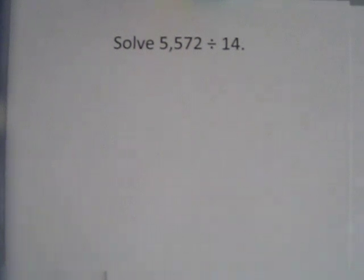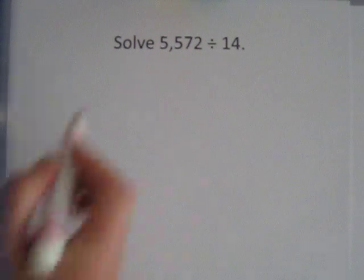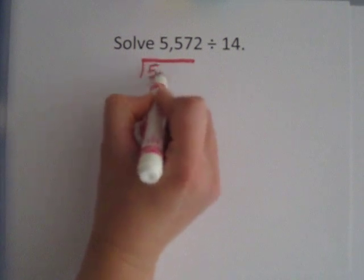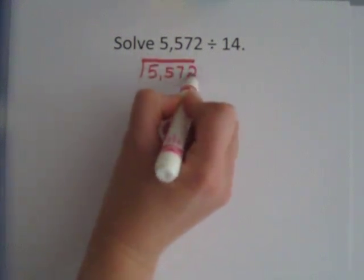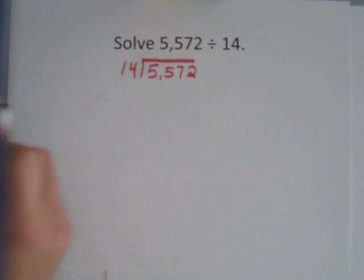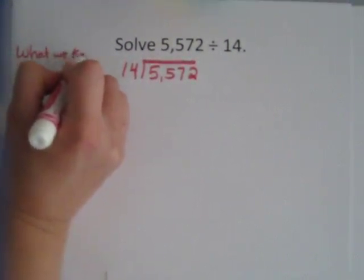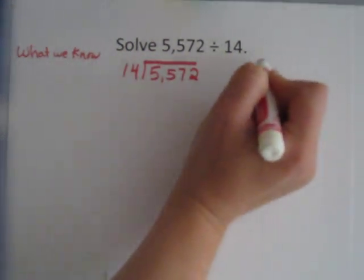Today we're going to solve a division problem using partial quotients. Our problem is 5,572 divided by 14. So first I'm going to put that into our problem, and I'm going to set up what we know and add it up.